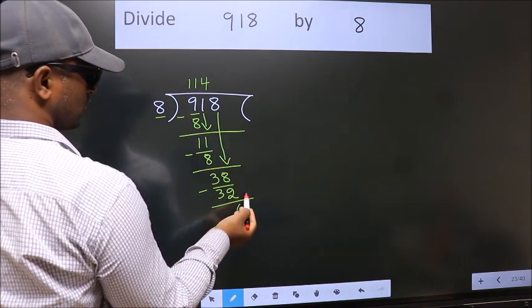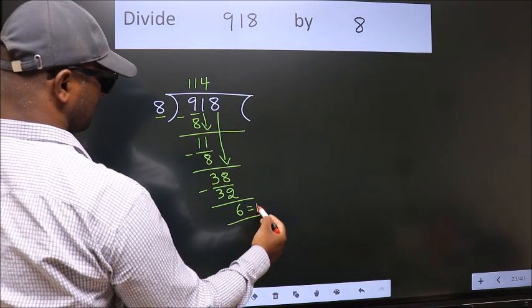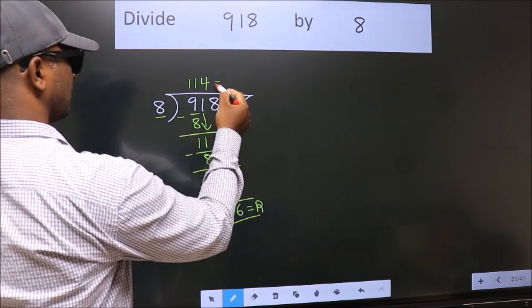No more numbers to bring down. So we stop here. This is our remainder. This is our quotient.